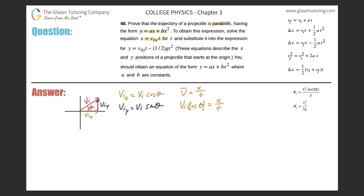Now, if I solve this for time, I get this equation: the initial resultant velocity multiplied by cosine of theta equals the x displacement over time. Solving for time gives us t equals x divided by the initial velocity times cosine of theta. Hold that thought for one minute.